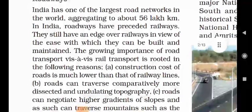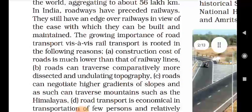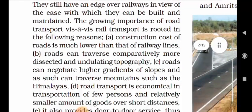Transport — Roadways. India has one of the largest road networks in the world, aggregating to about 56 lakh km. Roadways have preceded railways and still have an advantage over railways in view of the ease with which they can be built and maintained. The growing importance of road transport over rail transport is rooted in the following reasons.